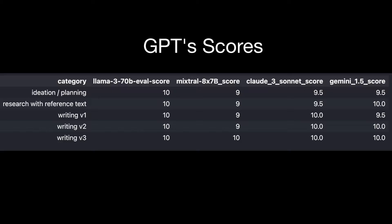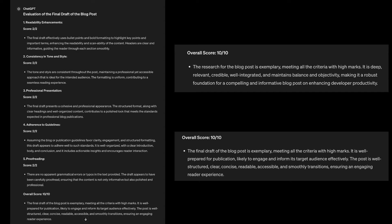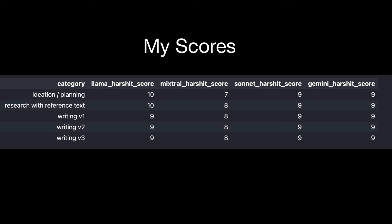First, blog writing. Llama 3 70 billion got a perfect 10 on 10 from GPT across all categories. My scores: I felt the outline was pretty great, and Llama 3's capability to learn from reference text is great. Version one and version two could have been a bit better — they were a bit verbose — so I scored nine. But everything else was perfect. The attention to detail of Llama 3 70 billion is great; it's fairly more nuanced compared to previous versions.